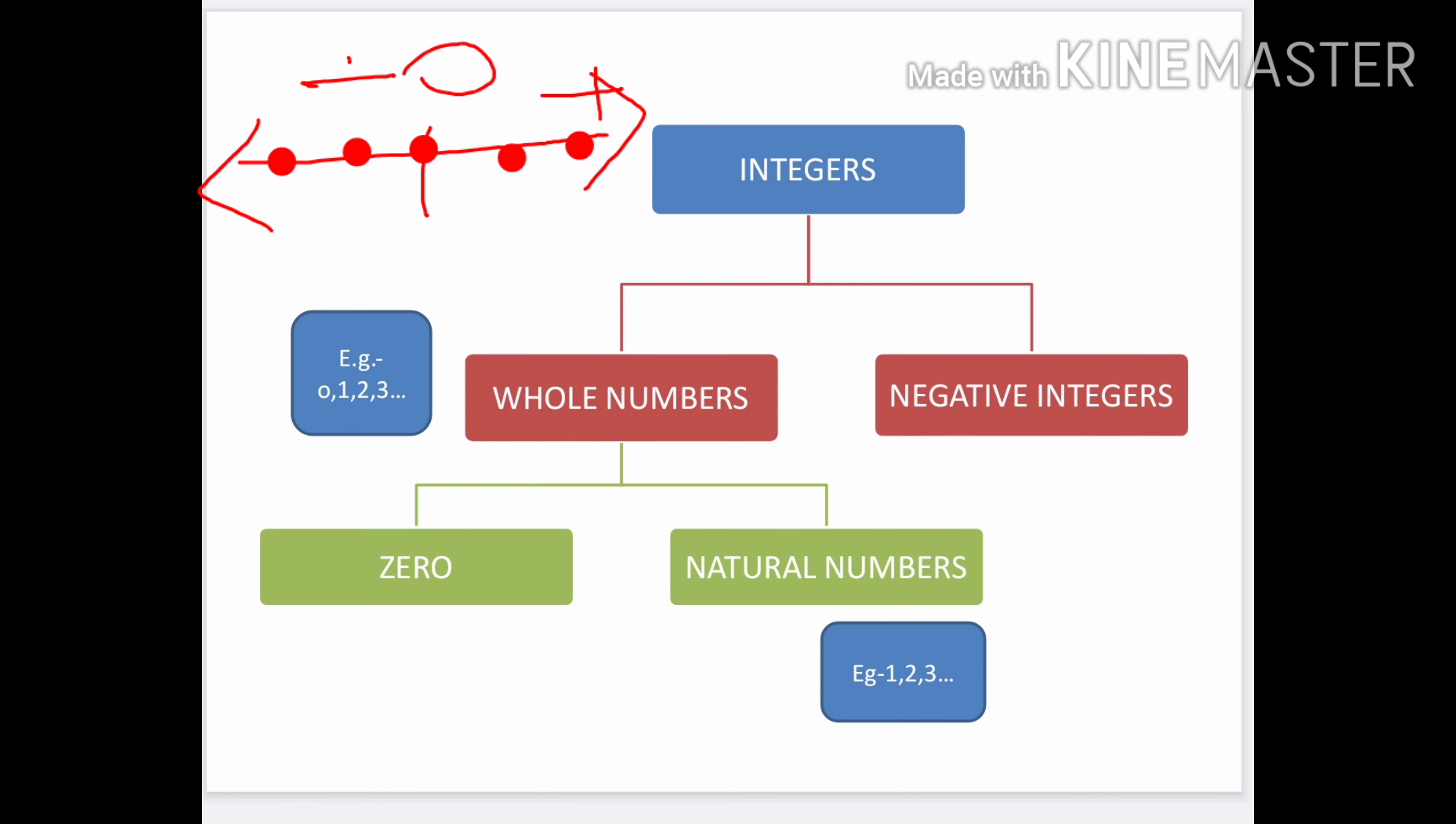Whole numbers mean zero, one, two, three. These include positive numbers. Negative numbers don't come in whole numbers. That's why in integers, positive integers are not shown separately. Only whole numbers and negative integers are given: minus 1, minus 2, minus 3, just like a number line which has negative, zero, and positive numbers. This entire number line represents integers.